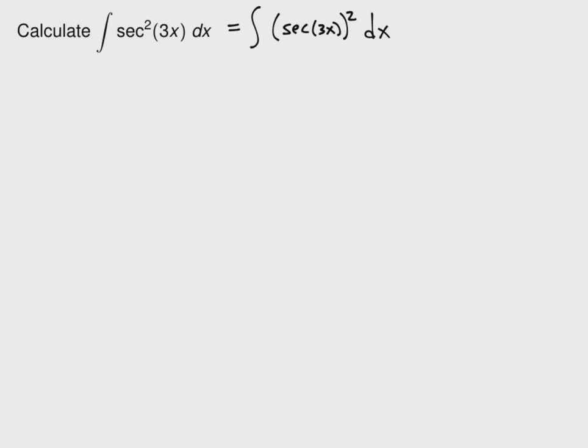And I notice there's really two inner functions going on here. We have secant inside the square, but then we also have the 3x inside the secant. So this is two composite functions nested together. And so the question is, which of those should we use as the inner function?